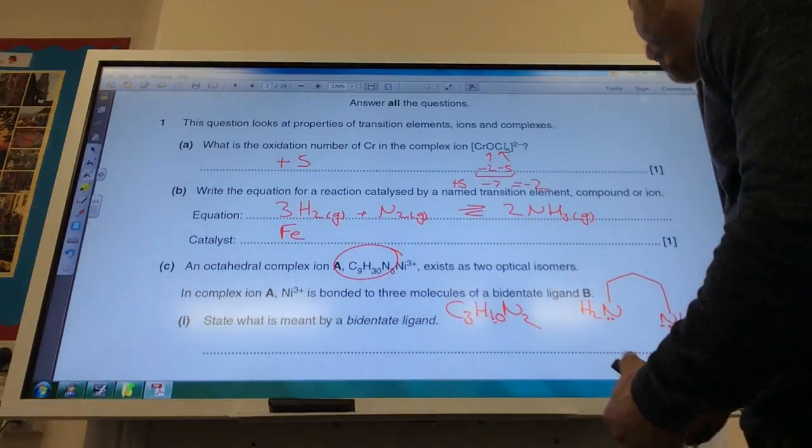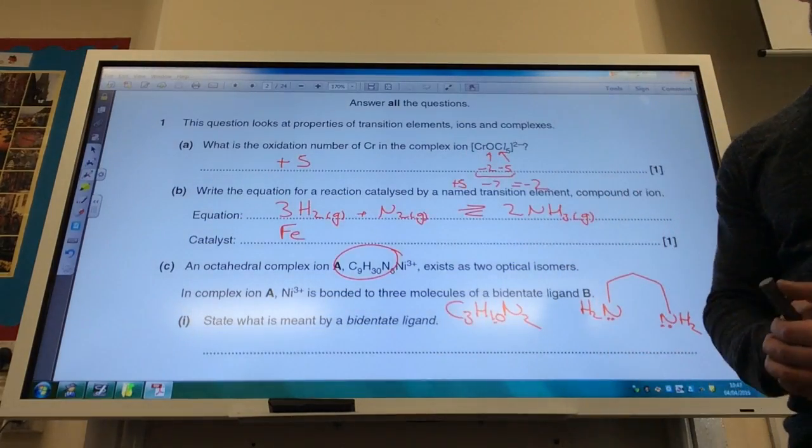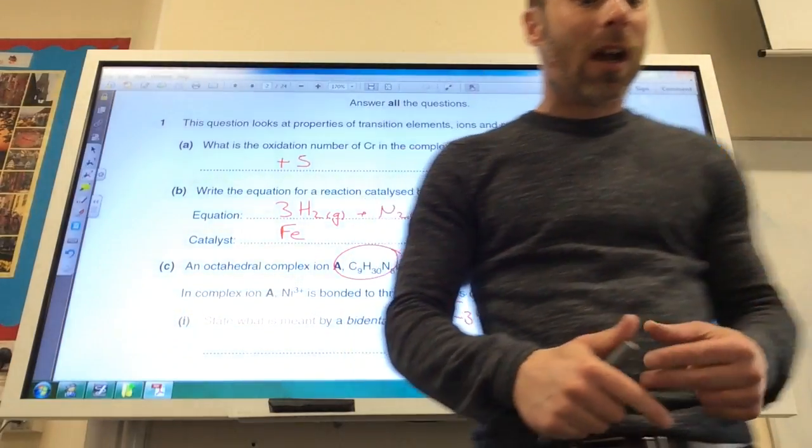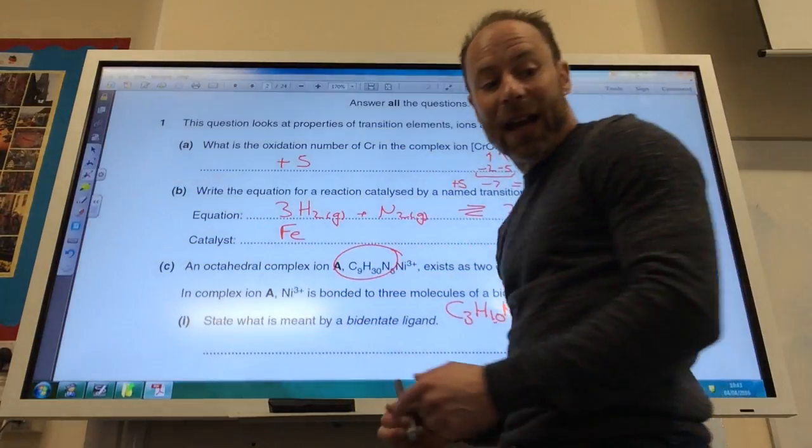So that's the structure. How can it act as a bidentate ligand? Each nitrogen atom has a lone pair of electrons on it.